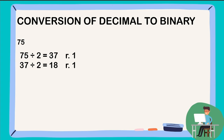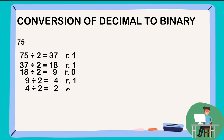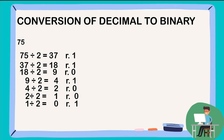Repeat the same process. 18 divided by 2 is equal to 9 remainder 0. Then 9 divided by 2 is equal to 4 remainder 1. 4 divided by 2 is equal to 2 remainder 0. 2 divided by 2 is equal to 1 remainder 0. And then the last one: 1 divided by 2 is equal to 0 remainder 1. All the remainders will be our binary, read and written from bottom to top.